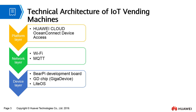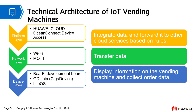The network layer uses Wi-Fi and MQTT for communications. The device layer uses the BarePi IoT development board, which is equipped with the GD32F303AGT6 chip and runs LightOS, a Huawei IoT operating system. Huawei Cloud OceanConnect device access is used for data integration. The rule forwarding function can forward data to other Huawei Cloud services such as Big Data. The network layer is responsible for data transmission, and the device layer is responsible for man-machine interaction and data generation.